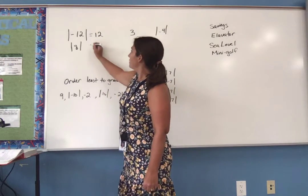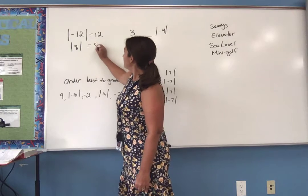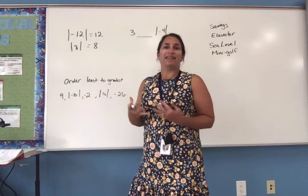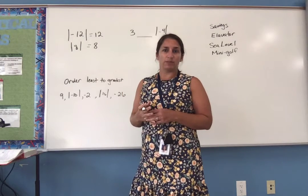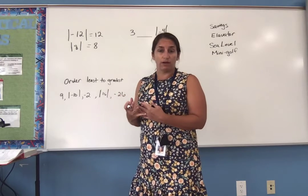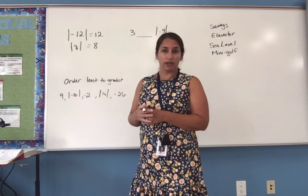If we have the absolute value of 8, the distance from zero is 8 spaces. Sometimes people like to think of this as just taking off the sign. Whether it's positive or negative, it's now positive because we're just talking about distance, not direction.